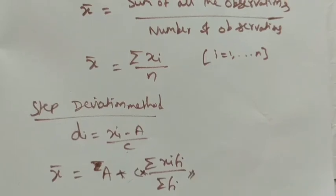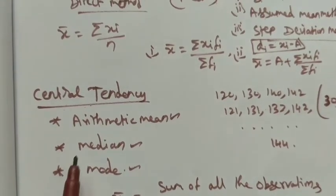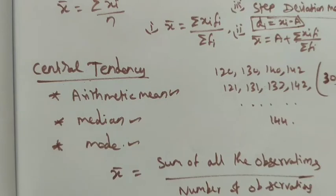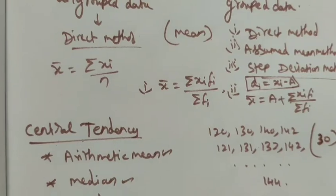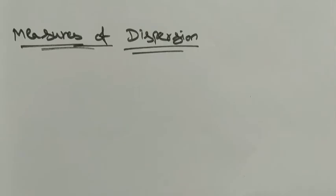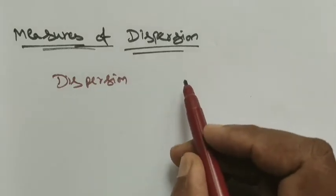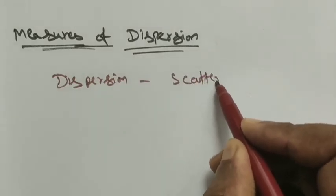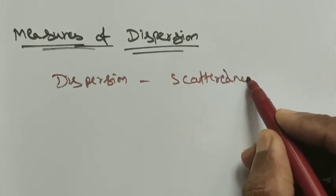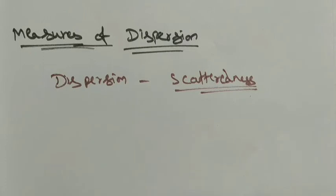Up to ninth standard, we have studied central tendency and how to find the mean for grouped and ungrouped data using arithmetic mean. Now, in the tenth standard portion, we are going to study measures of dispersion. Dispersion gives the idea about the scatteredness of values — it can also be called measures of variation, since variation means difference.